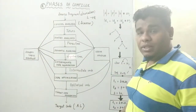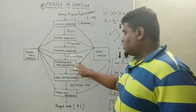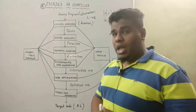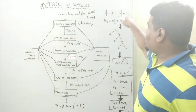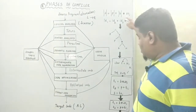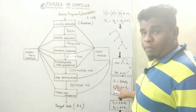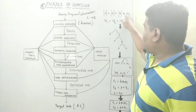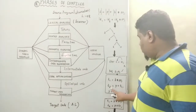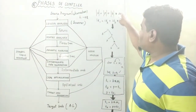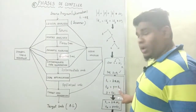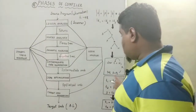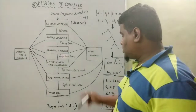Now we move on to intermediate code generation. It receives the syntax tree as input and produces the intermediate code using 3-address code. For example, the expression s is equal to p plus v star 20 is converted like this: t1 is equal to b star 20, then t2 is equal to p plus t1, and finally s is equal to t2. This is the concept of intermediate code generation.